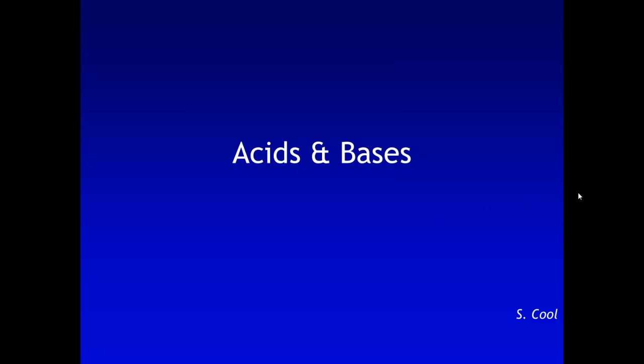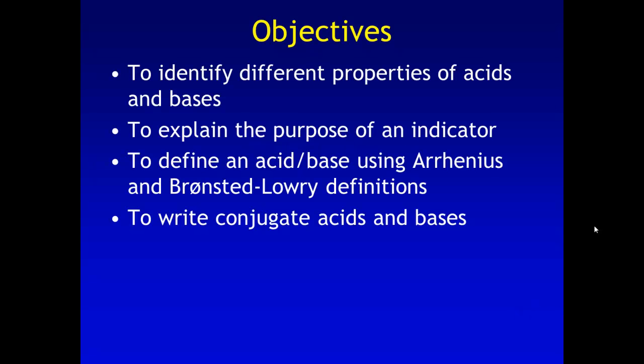All right, so this is the lecture to go with acids and bases. This is currently unit 11 for us, and this is the first lecture that goes along with your notes. With this lesson, you're going to learn to identify different properties of acids and bases, understand the purpose of an indicator, figure out how to define an acid and a base using two different definitions, the Arrhenius definition and the Bronsted Lowry, and then to be able to write conjugate acids and bases.